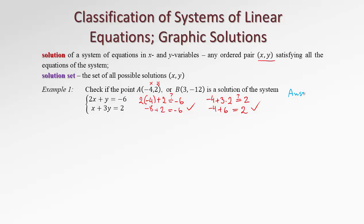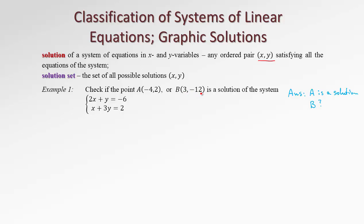So we can say A is a solution to this given system of equations. Let's do the same for B — is B a solution or not? Let's erase our previous calculations and now we'll talk about point B. Let's plug into the first equation. That will be 2 times 3, plus y is negative 12. Is that equal to negative 6? 6 minus 12 — yes, it's negative 6. So this equation is satisfied by the coordinates of point B.